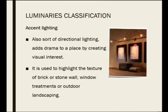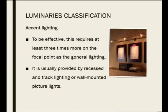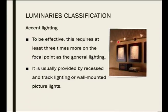Accent lighting accentuates — it gives an extra feeling to something. It is a directional lighting that focuses on one point, adds drama, and creates visual interest. It is used to highlight textured walls, wall hangings, or artwork. To be effective, the accent light should be at least three times more intense than the general lighting in that area — otherwise the focus will not be apparent. This is usually provided by recessed and track lighting, as well as wall-mounted picture lights.